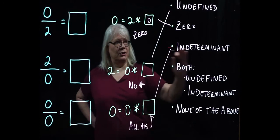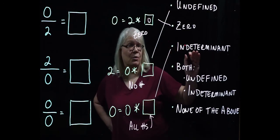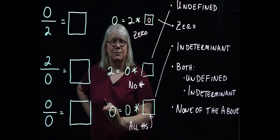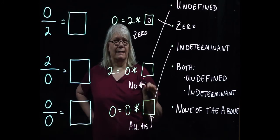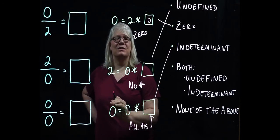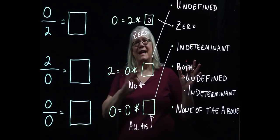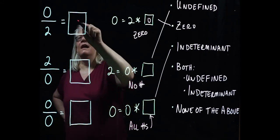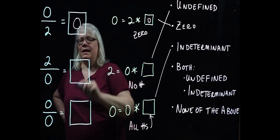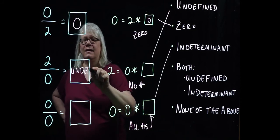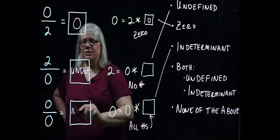So in this case, we call it indeterminate because I cannot determine a single unique value that makes a statement true. I can get lots of them, but I can't get one number that makes this true. So in the end then, our values for our ratio comes out to this. I get zero here, here, this is undefined and this last one is indeterminate.